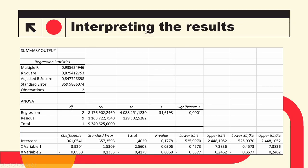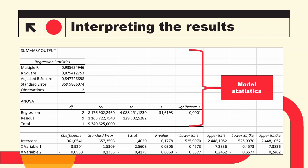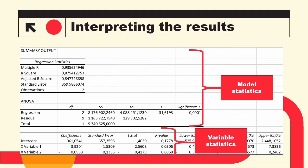Now that we have our regression results, we see that there are three sections. The top section shows our overall regression statistics. The second section is titled ANOVA, which stands for Analysis of Variance. These two sections speak to our overall model fit. The third section lists our variables with a range of statistics relating to the individual variables in our model.